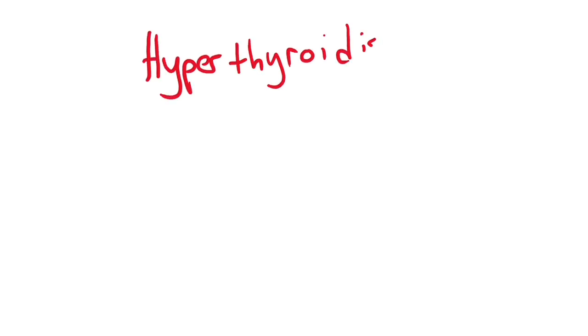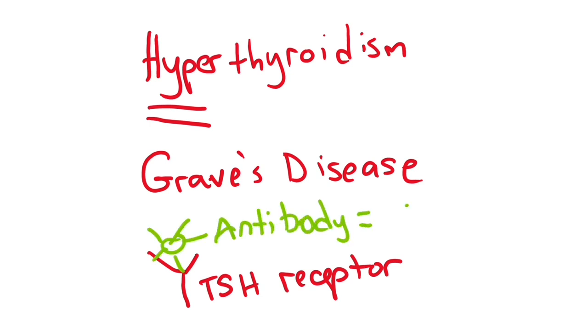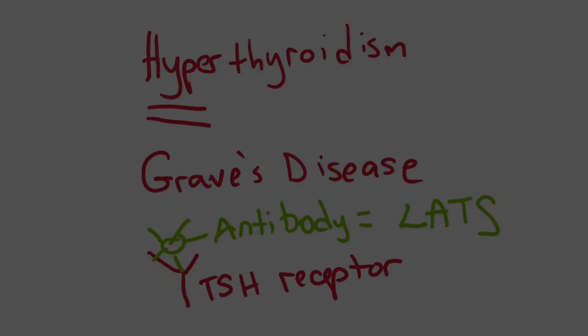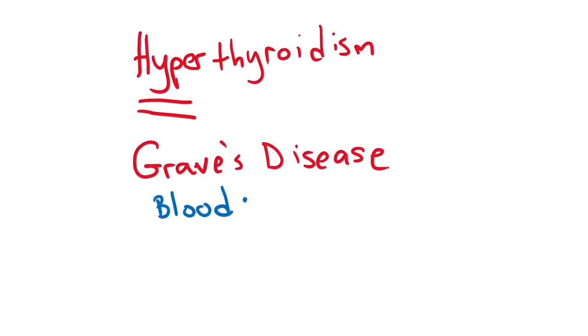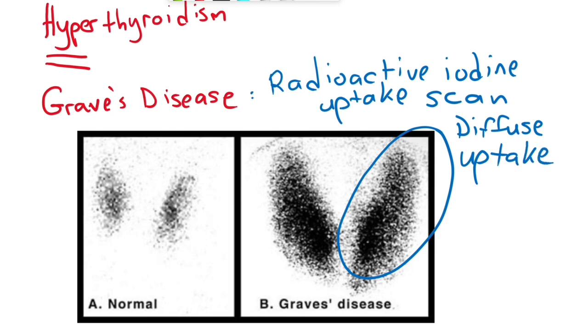Let's talk about hyperthyroidism. The most common cause of hyperthyroidism is Graves' disease which is stimulation of the thyroid by antibodies against the TSH receptor called long-acting thyroid stimulating immunoglobulin or LATS. Blood testing shows low TSH, increased T3 and T4 and radioactive iodine uptake scan can show a diffuse increase uptake in the gland.